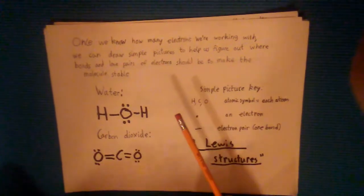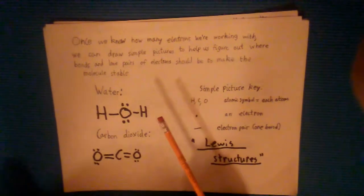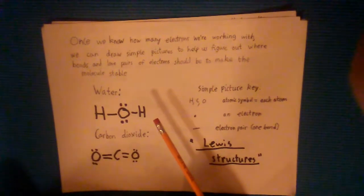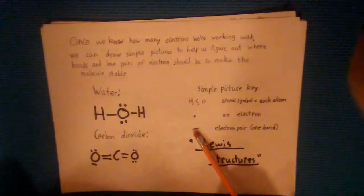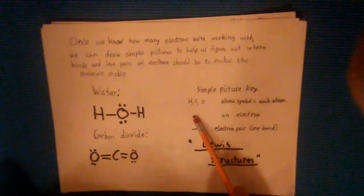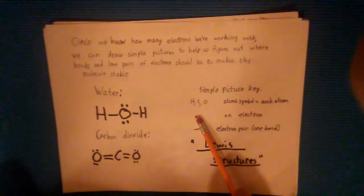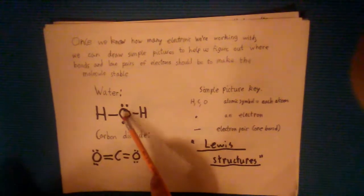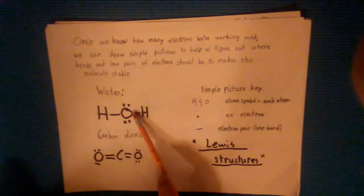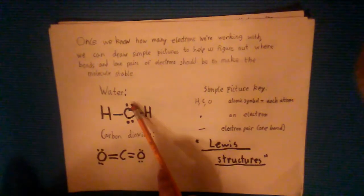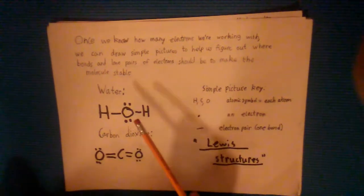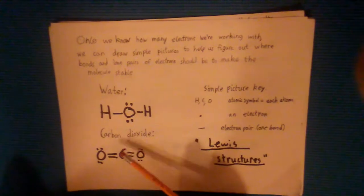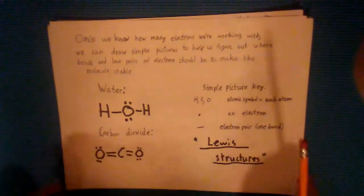To help us keep track of all these bonds and electrons we're going to use a simple diagram called a Lewis structure. It uses lines to represent bonds and dots to represent extra electrons that can get distributed as lone pairs. For water you have the oxygen single bonded to two hydrogens and two extra lone pairs left over on the oxygen. For carbon dioxide you have carbon double bonded to two oxygens.